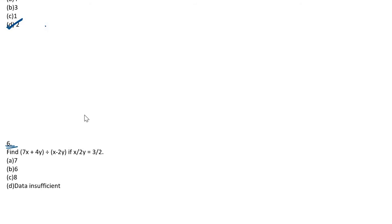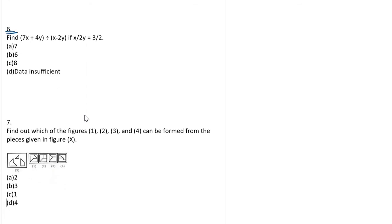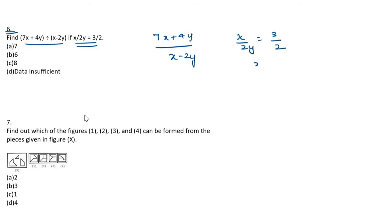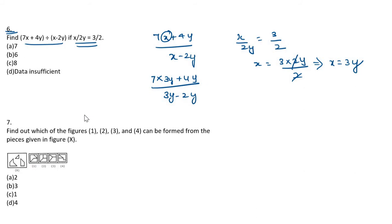Question number 6: Find (7x + 4y) / (x − 2y). Some hints are given: x/2y = 3/2. Cross multiply: x = 3 × 2y / 2, so x = 3y. Substitute in place of x: (7×3y + 4y) / (3y − 2y) = (21y + 4y) / y = 25y/y = 25. The answer is 25. The option should be 25, so one option needs to be added.